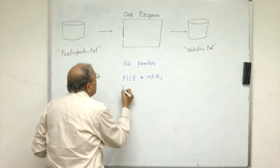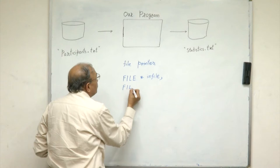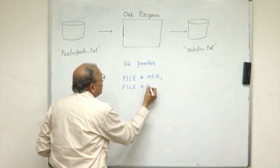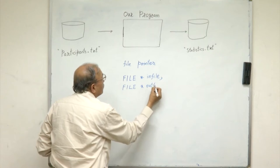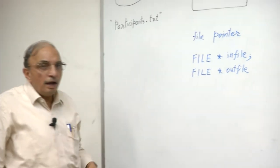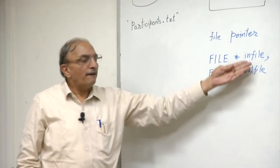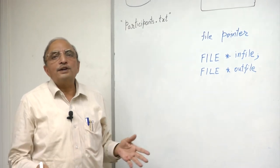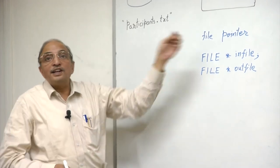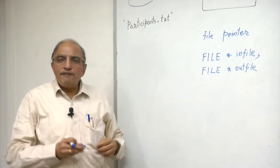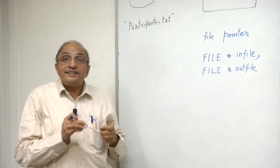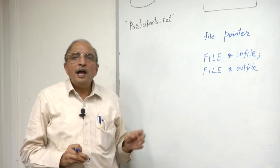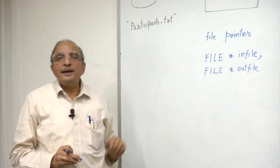Similarly, I could declare, for example, a file called outfile. Clearly these names infile and outfile are arbitrary names of my choice and they have no connection whatsoever with any external real file. So the first thing that we need to do in a program is to establish an association with an internal file name and a corresponding external name.